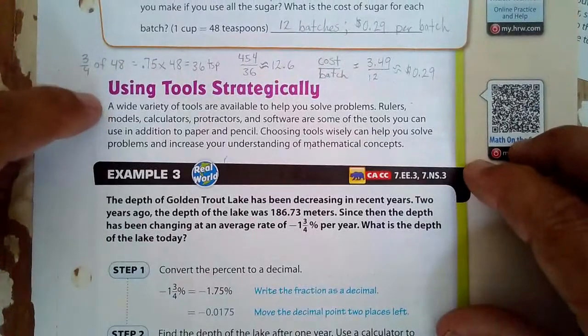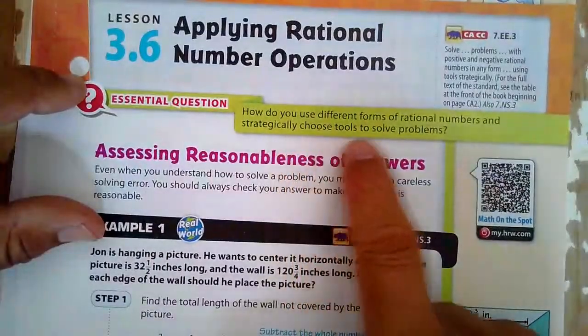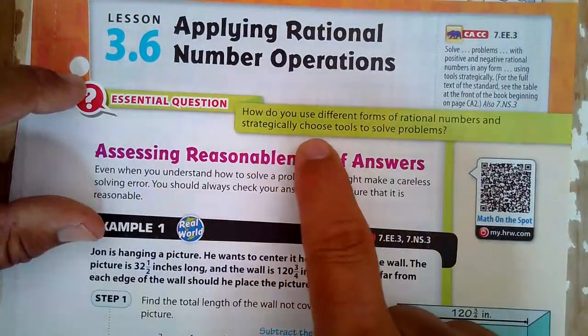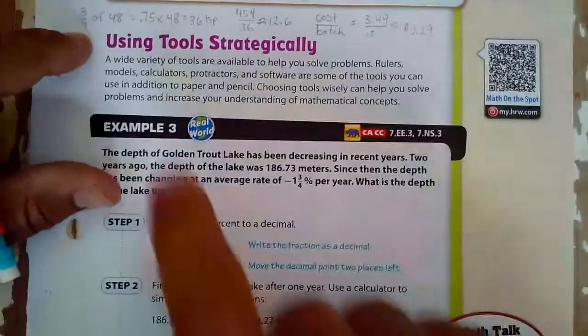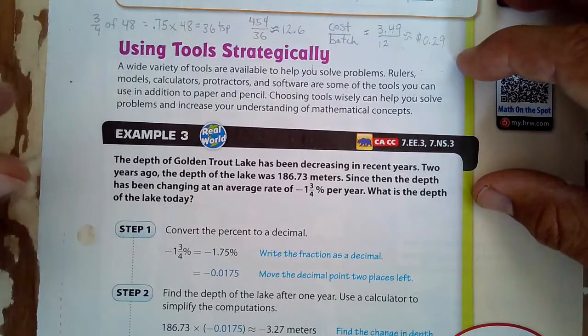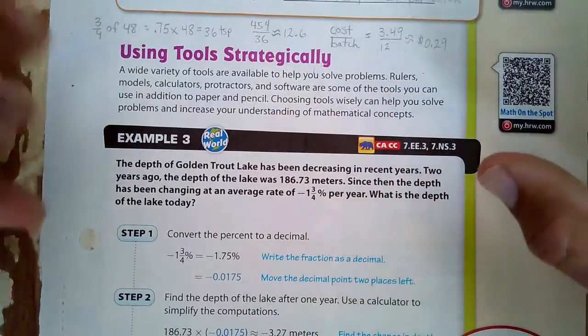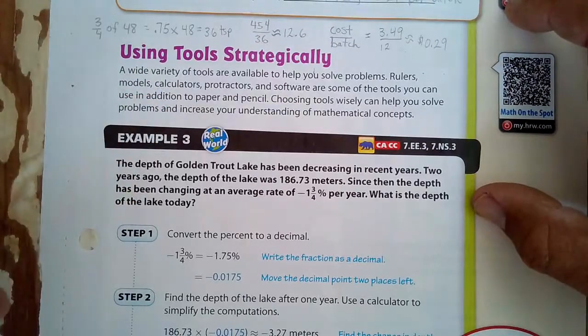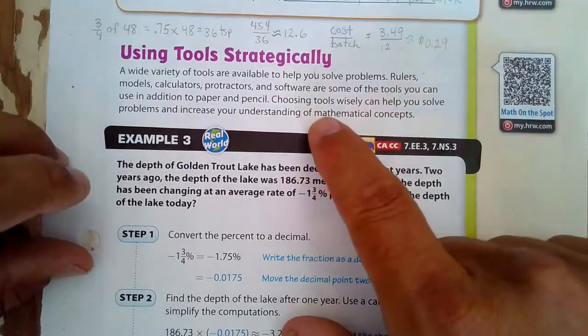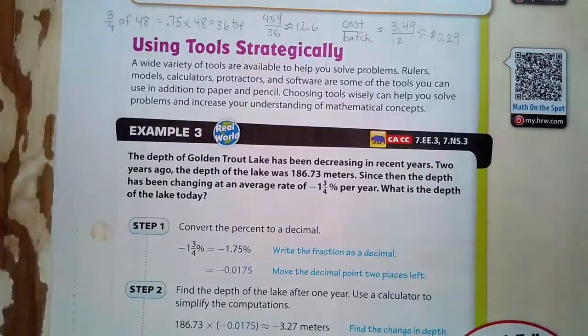Using tools strategically. Remember right here, we're using strategically to choose tools to solve problems. A wide variety of tools are available to help you solve problems like rulers, models, calculators, and protractors. Software are some of the tools you can use in addition to paper and pencil. Choosing tools wisely can help you solve problems and increase your understanding of mathematical concepts.